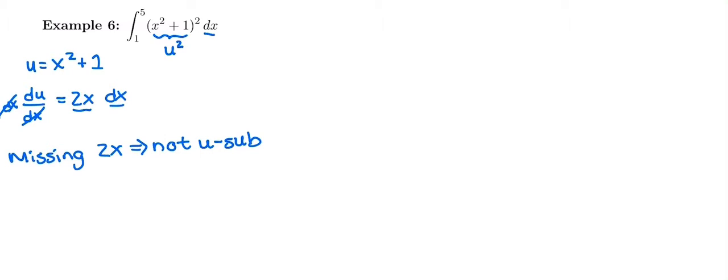Which is a bummer because that means we're going to have to do some algebra to get rid of what looks like a chain rule. So I need to switch gears and think about algebra. I'm going to do some side work down here instead. Instead of u sub, we're going to do some squaring.